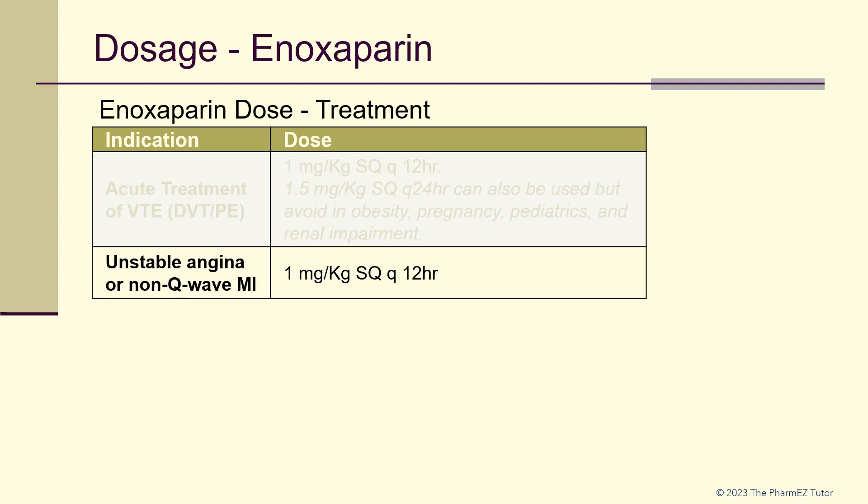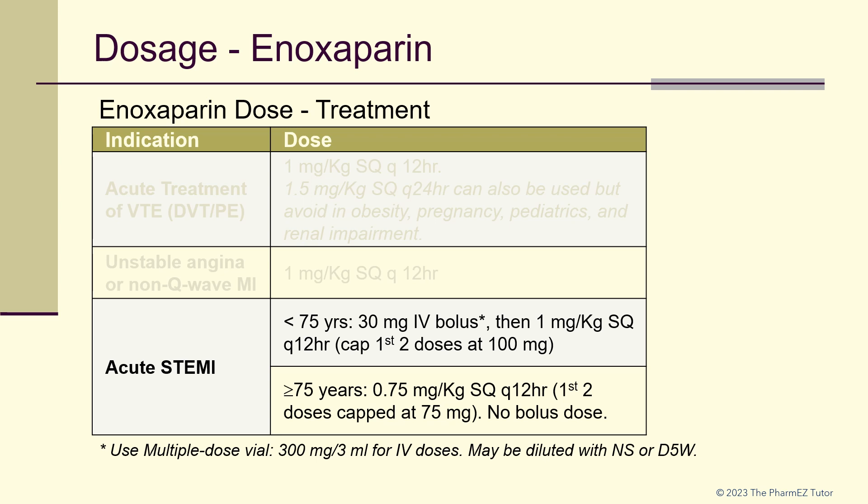For unstable angina or non-Q wave MI, the treatment dose is 1 mg per kg subcutaneously every 12 hours. For acute STEMI, the enoxaparin treatment dose depends on age. If the patient is younger than 75 years old, a 30 mg IV bolus is first given, followed by 1 mg per kg subcutaneously every 12 hours, with the first two doses capped at 100 mg. To give enoxaparin via IV bolus, use the multiple-dose vial, and the dose can be diluted with saline or D5W. For patients 75 years or older, no bolus is given — just 0.75 mg per kg subcutaneously every 12 hours, with the first two doses capped at 75 mg.